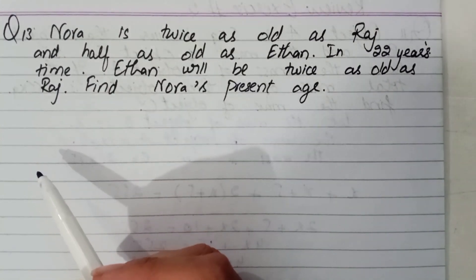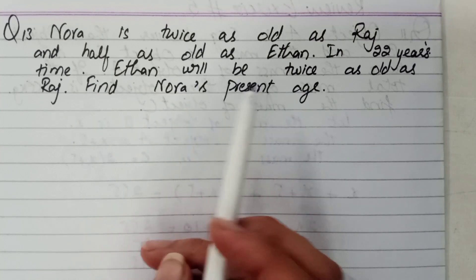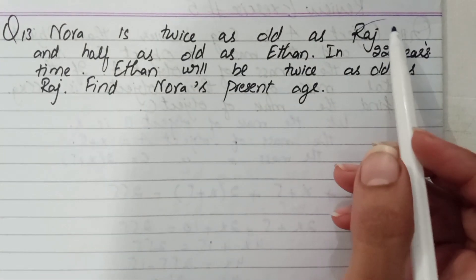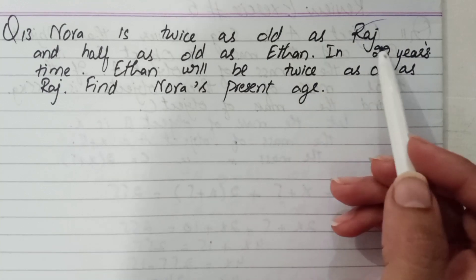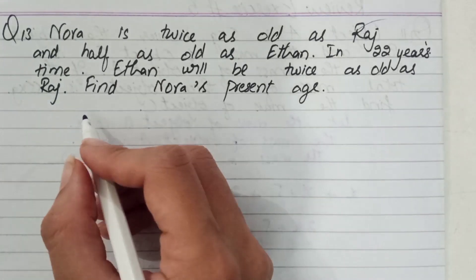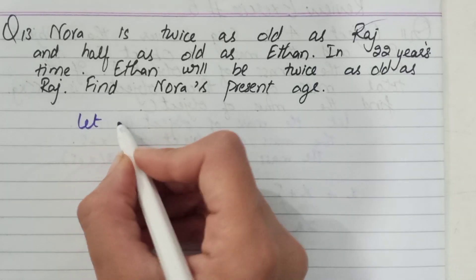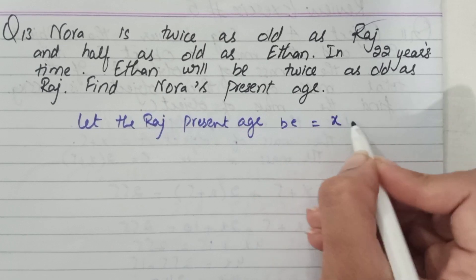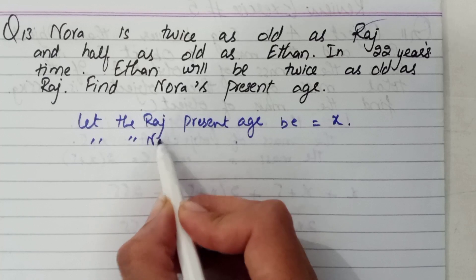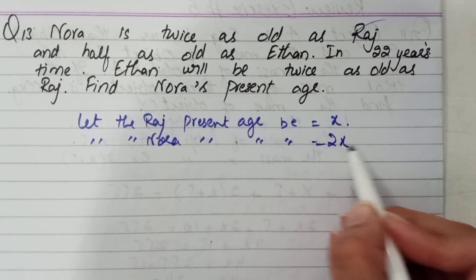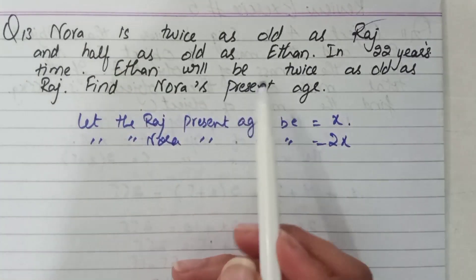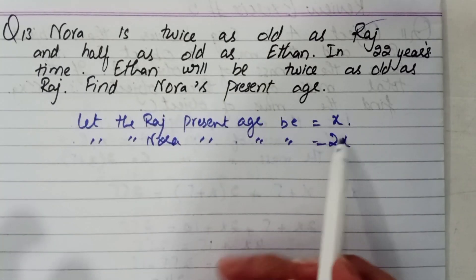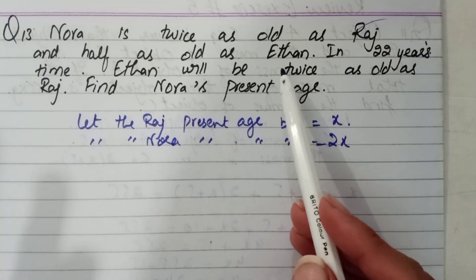Question number 13: Nora is twice as old as Raj and half as old as Ethan. In 22 years, Ethan will be twice as old as Raj. Find Nora's present age. The comparison is with Raj's age, which is not given, so we suppose it. Let Raj's present age be x. Then Nora's age is 2x, and since Nora is half as old as Ethan, Ethan's age is 4x.